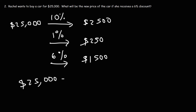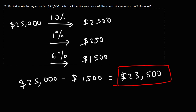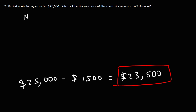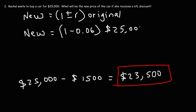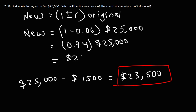So if we discount the original price by 6%, or by $1,500, we get the new sell price of $23,500. Let's confirm this using our formula. The new price is 1 minus R times the original price. We're dealing with a discount, so it's negative R. 6% as a decimal is 0.06, and the original price is $25,000. Decreasing 100% by 6% leaves us with 94%, so the new price is 94% of the original. 0.94 times $25,000 gives us the same answer: $23,500.